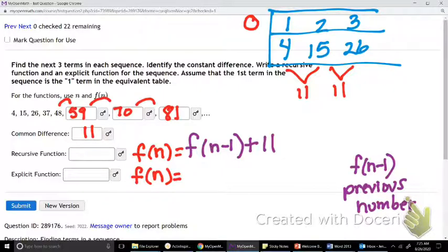To find an explicit function, we start with term 0 and take our common difference. So our common difference is 11, and every time we add 11, so 11 is our rate of change. It goes next to our letter, and then we add the number we start with.